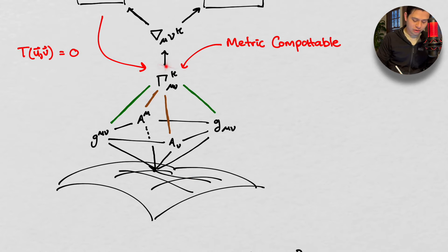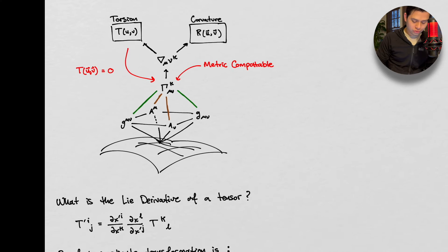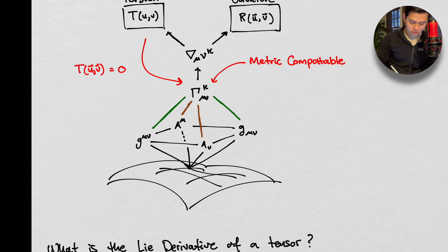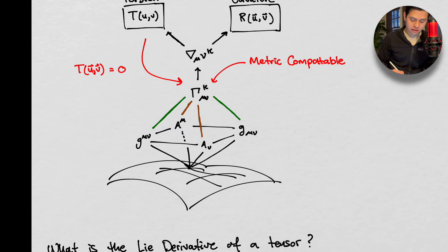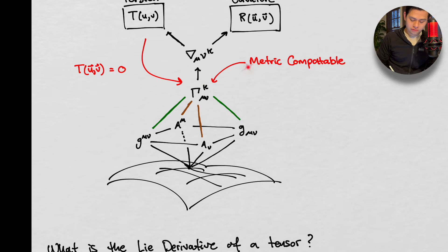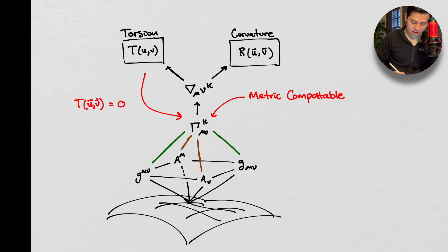So that's what metric compatibility means. We're also implying torsion-free, so this is a metric-compatible, torsion-free affine connection — also called the Levi-Civita connection. From there, we defined a covariant derivative: this is the covariant derivative of V in the direction mu.